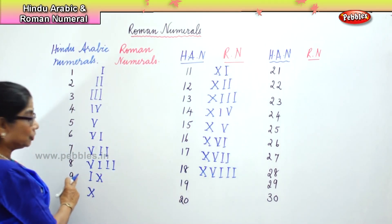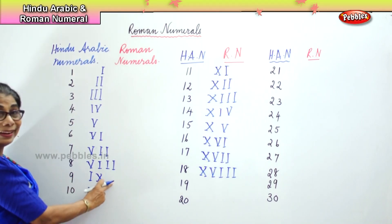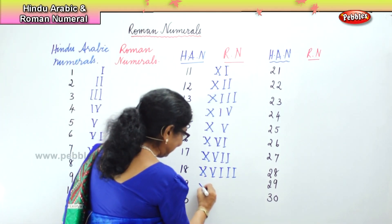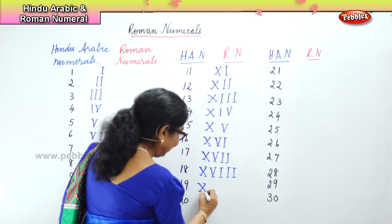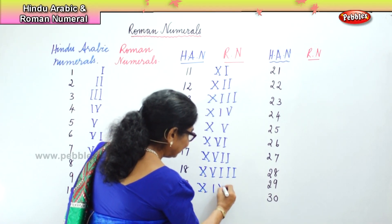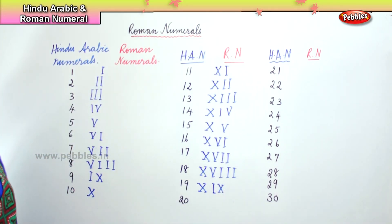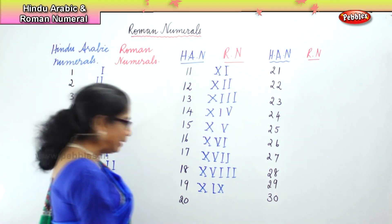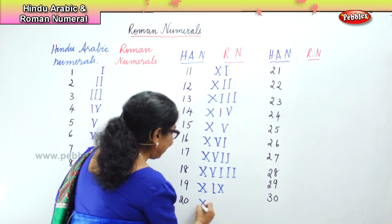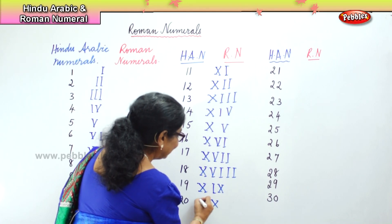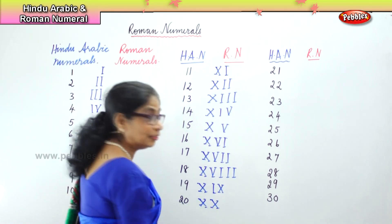Again in nineteen there is a change: ten and nine. Very easy — you write the ten, then you write the nine. Ten and nine is nineteen. How do you write twenty? Two tens: ten and ten is twenty. The Roman numerals are very, very interesting.